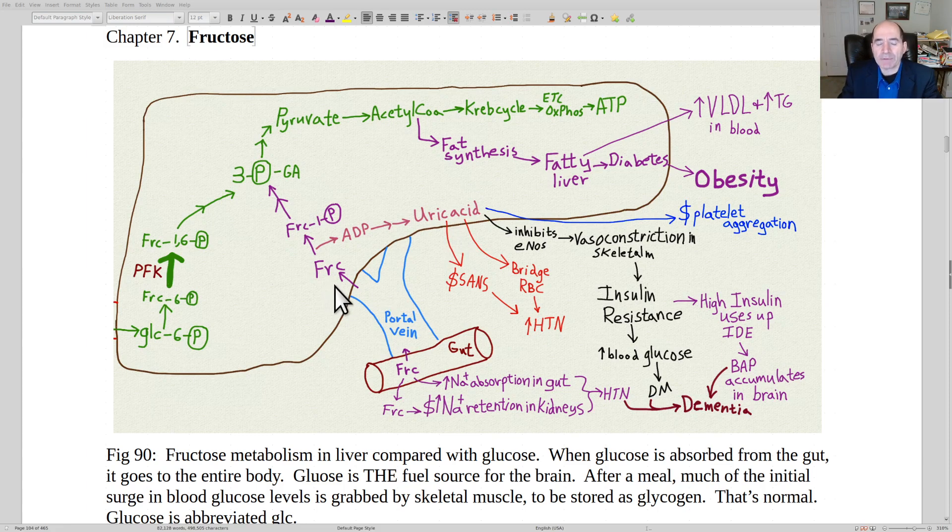What also happens is the fructose, because it's not regulated, can very quickly first come into the liver cell and get phosphorylated, same thing happens with glucose, to phosphorylate it because that puts a charge on it so it can't exit out the plasma membrane. But because the fructose can rapidly undergo this in an unregulated way, it can deplete the ATPs.